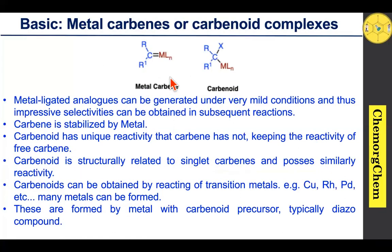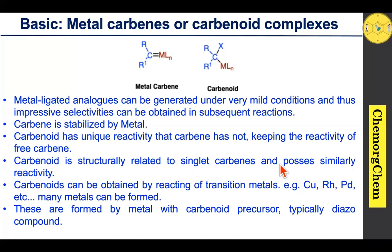Let's move on to metal carbenes or carbene complexes. Since we are going to explore copper carbene-based reactions, we should know what exactly a metal carbene or carbene complex is. A carbene stabilized by a metal is called a metal carbene. The carbene carbon is attached to a metal as well as a leaving group; this is called a carbenoid. This carbenoid carbon has reactivity similar to singlet carbene. Carbenoids can be obtained by reacting with various transition metals such as copper, rhodium, palladium, molybdenum, and sometimes iron.